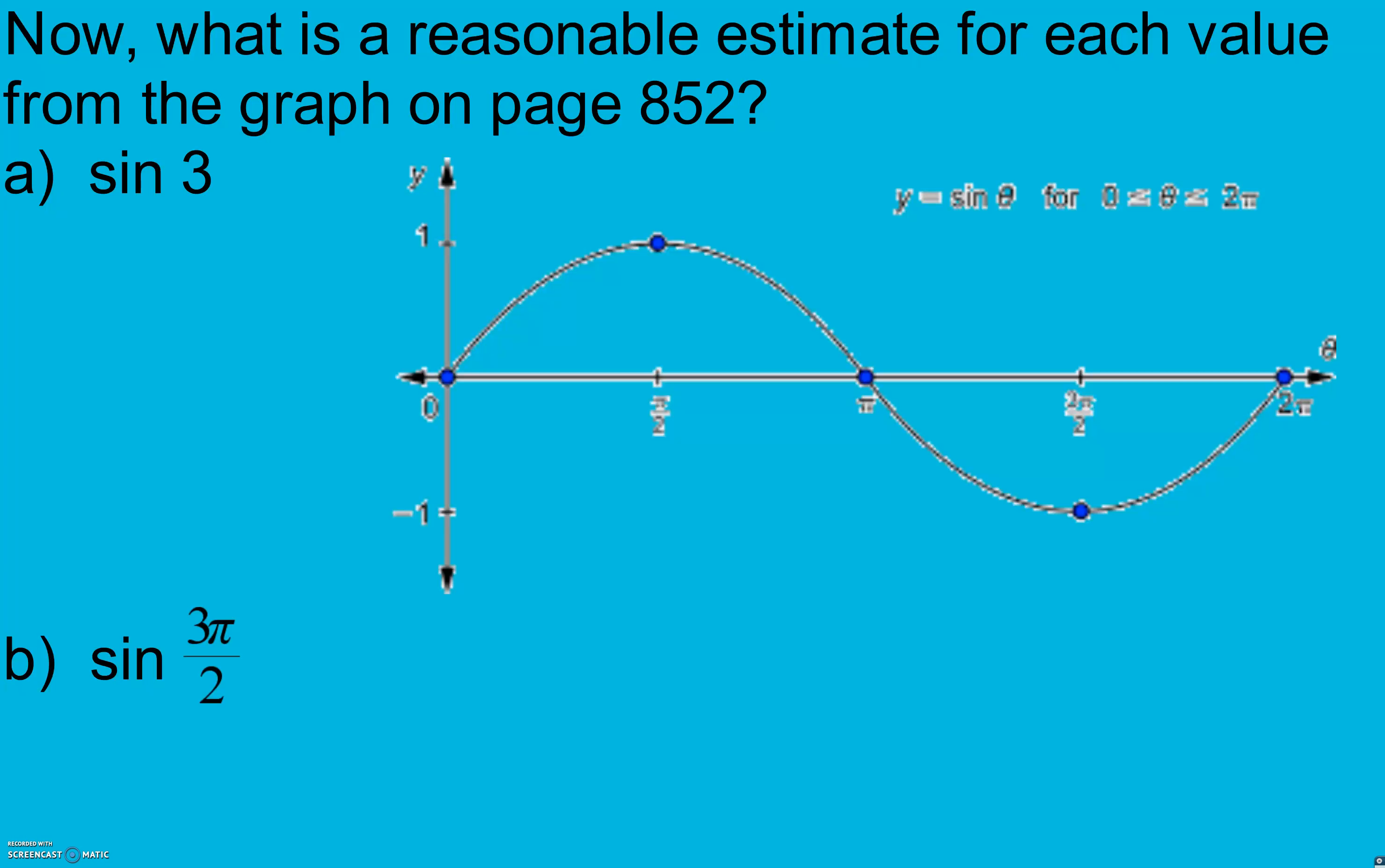A reasonable estimate for each value from the graph here. Again, pi is 3.14 and this is 1.57. So we have like a 1, a 2, a 3 probably or pretty close anyway. I'm going to say that's about 3. For me, if this is 1 and this is 0, I'm going to say it's about 0.2.